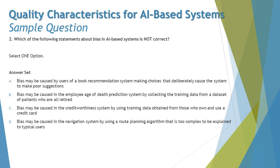The next question is about bias: which of the following statements about bias in an AI-based system is NOT correct? They are asking inversely — three statements are correct and one is incorrect, so you need to find the false one.